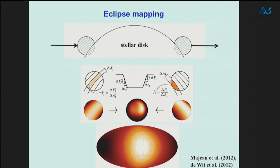Using the eclipse mapping technique, this two-dimensional map of the day side of HD 189733b shows that the hot spot is shifted to the east by an amount similar to what phase curves imply, and also that the hot spot is near the equator—within roughly plus or minus 20 degrees. This rules out the scenario where the light curve offset is due to some super-intense hot feature right near the pole with nothing happening at the equator.